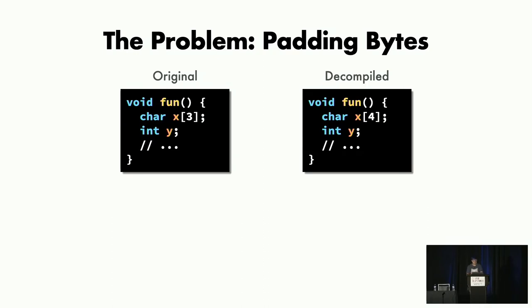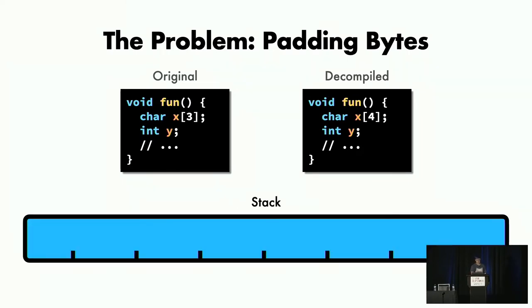This is the problem. The problem is padding bytes. On the left, you can see some function originally written by a developer, and on the right, you can see the output of the decompiler. As you can see, the X variable here has been decompiled as an array of four characters when it was originally written as an array of three.